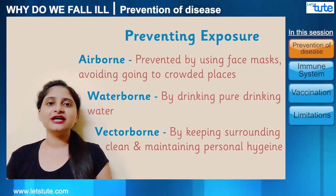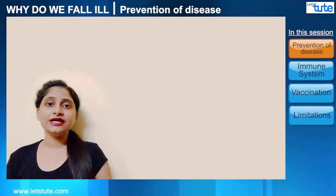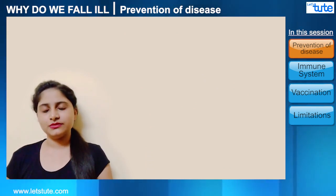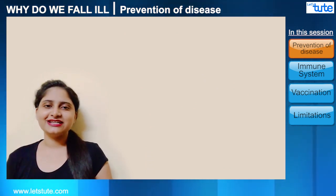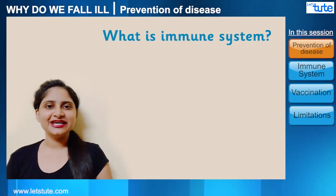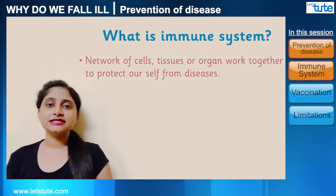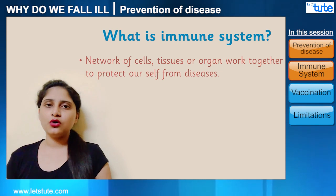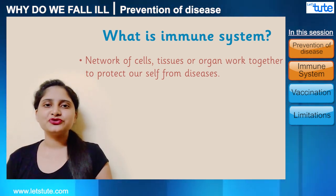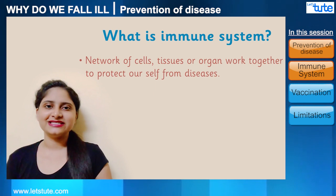Vector-borne diseases can be prevented by keeping our surroundings clean and maintaining personal or public hygiene. The second way is to strengthen our immune system. But first, let us understand what the immune system is — it is the network of cells, tissues, or organs that work together to protect ourselves from diseases.